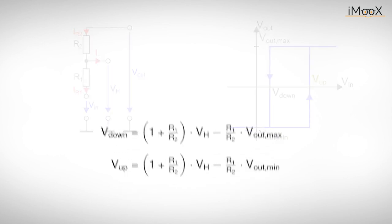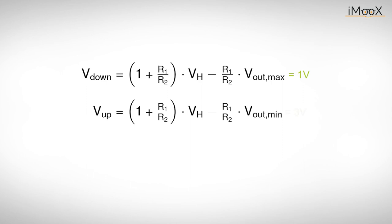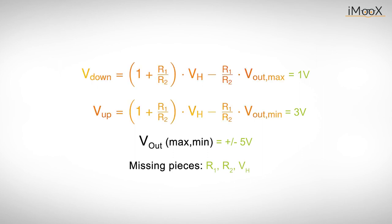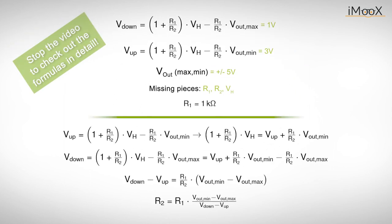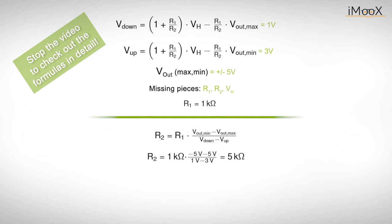As a small example, let's design a non-inverting Schmitt trigger with Vdown equals 1 volt and Vup equals 3 volts. The maximum and minimum output voltages are plus minus 5 volts. The missing pieces are the two resistors R1 and R2 and the voltage Vh. We already derived the equations for the trigger levels. Now we have three unknown quantities but only two equations. That's a problem, but a closer look on the equations reveal that only the relation of the resistors is important and not their absolute values. This means we just pick one of the resistors. Let's select R1 equals 1K. The rest is just a little bit of math. The second resistor has to be 5K, and the voltage equals 1.67 volts.